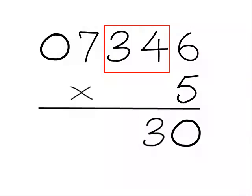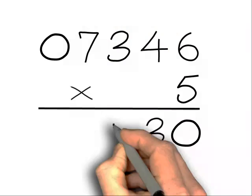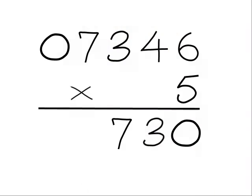Moving left, we come to 3. The neighbour is 4, so we use 2. Now 3 is odd, so we add another 5 to that and we have 7. So we write down the 7.